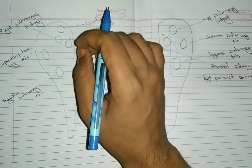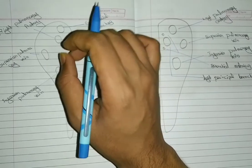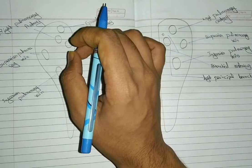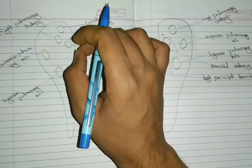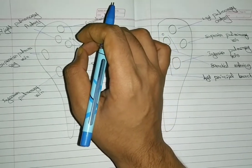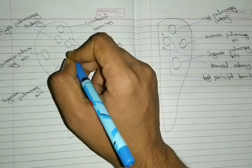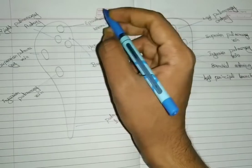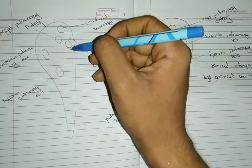Root of Lung is a short broad pedicle connecting the medial surface of the lung with the mediastinum. It consists of structures entering and leaving the lung at the hilum. The hilum is the area on the medial surface of the lung through which structures enter or leave the lung.